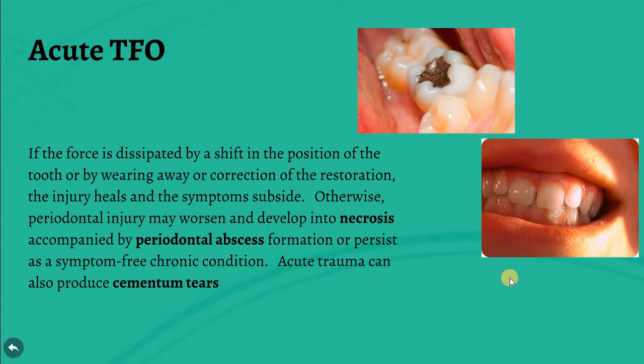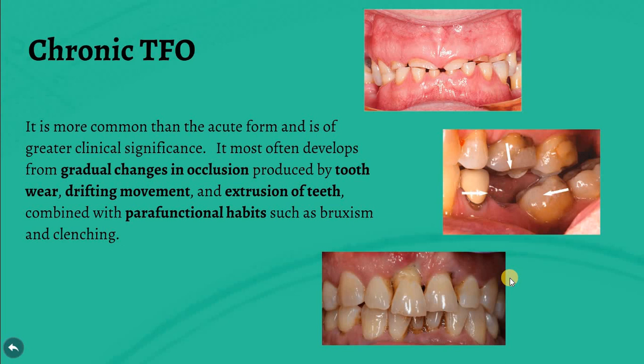Otherwise, the periodontal injury may worsen and develop into necrosis or may be accompanied by periodontal abscess formation, or it may present as a symptom-free chronic condition. Acute trauma also has the power to produce a cemental tear. Chronic trauma from occlusion, needing time to develop, is the most common form and has greater clinical significance.